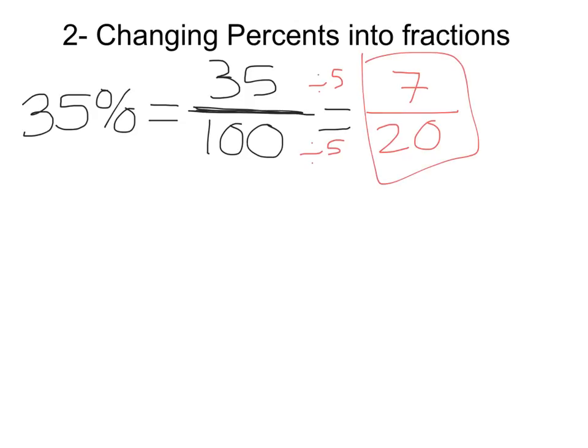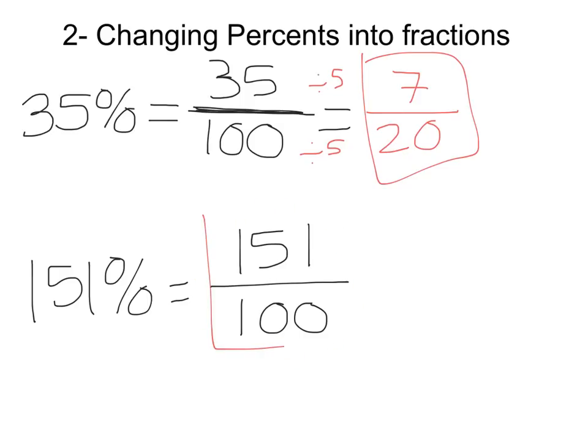Now for our second example, we could have something even over 100, such as 151%. Now even though this seems like, wait Mrs. K, you can't do this, you can't put this in a fraction form, we actually can. We just have to put the 151 over 100. Since we cannot simplify, reduce, or find an equivalent smaller version of 151 hundredths, we have simplified our fraction and converted it completely. Easy as pi.